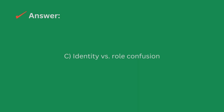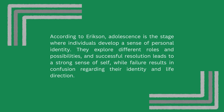The answer is letter C, Identity vs. Role Confusion. According to Erikson, adolescence is the stage where individuals develop a sense of personal identity. They explore different roles and possibilities, and successful resolution leads to a strong sense of self, while failure results in confusion regarding their identity and life direction.